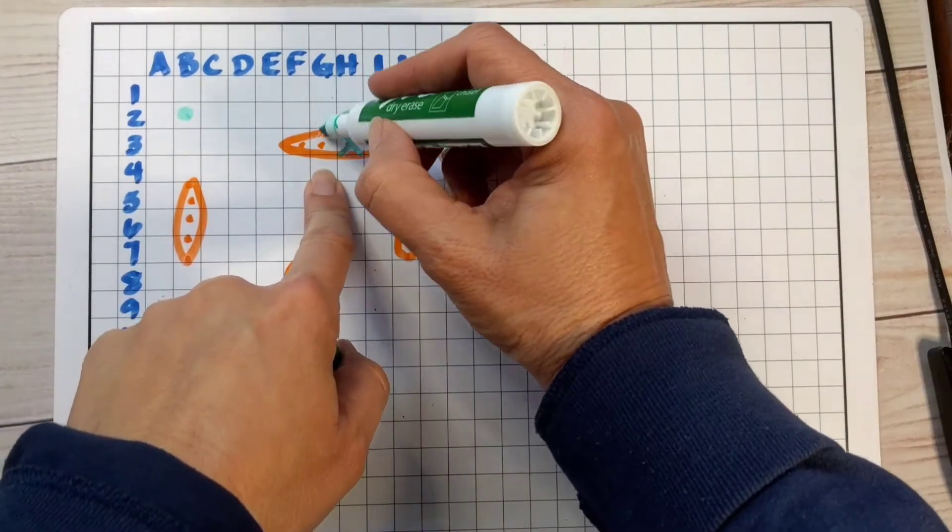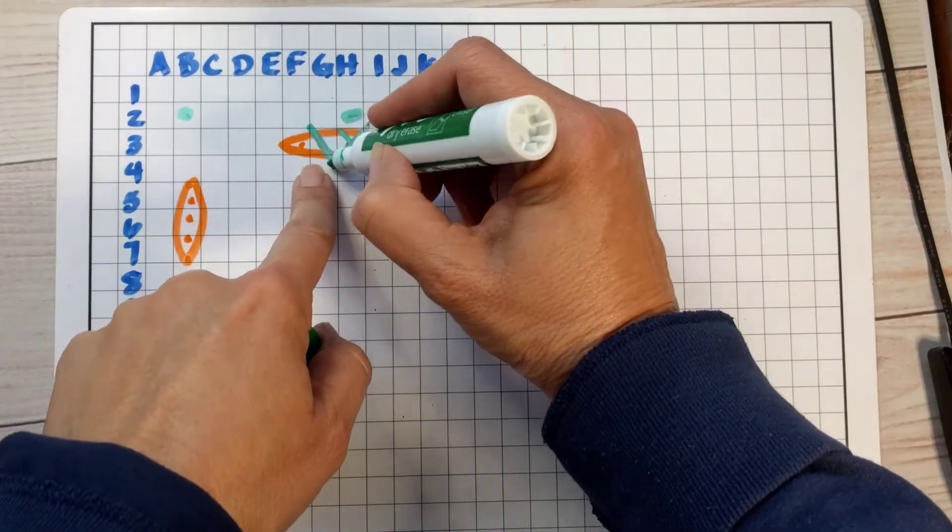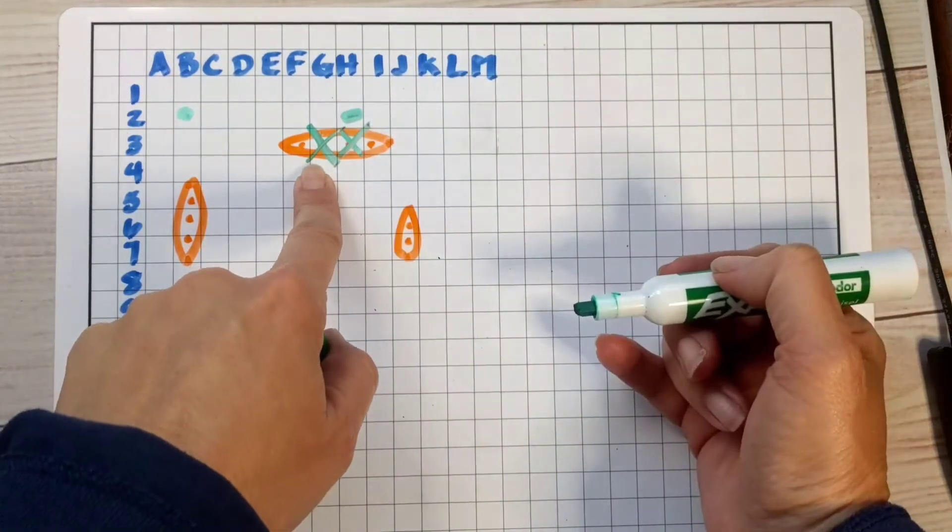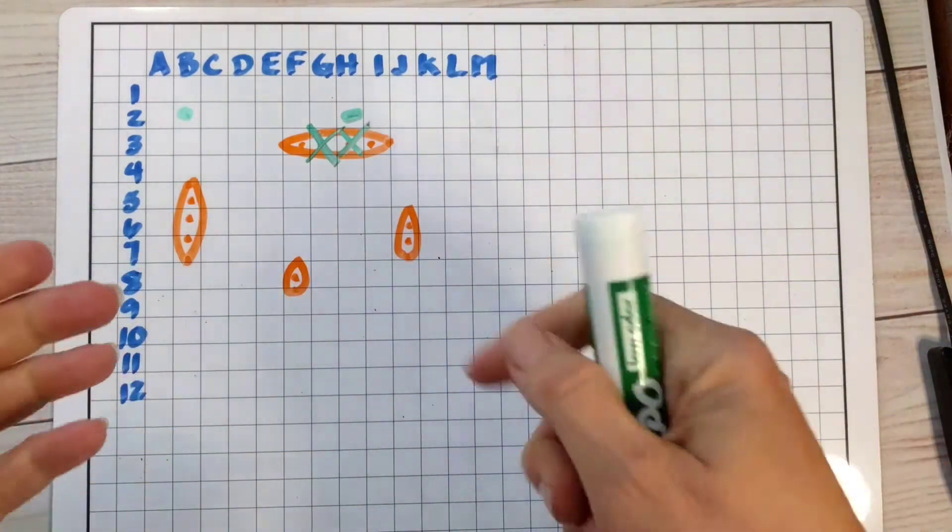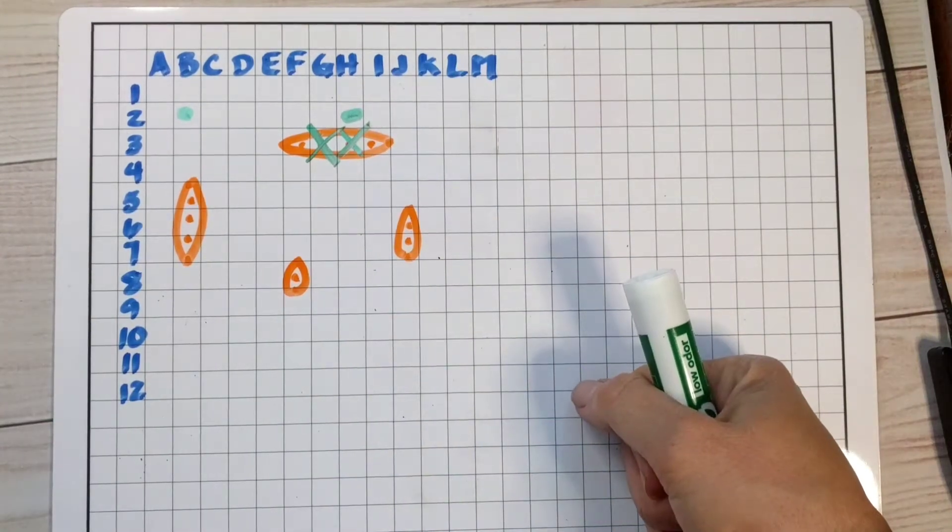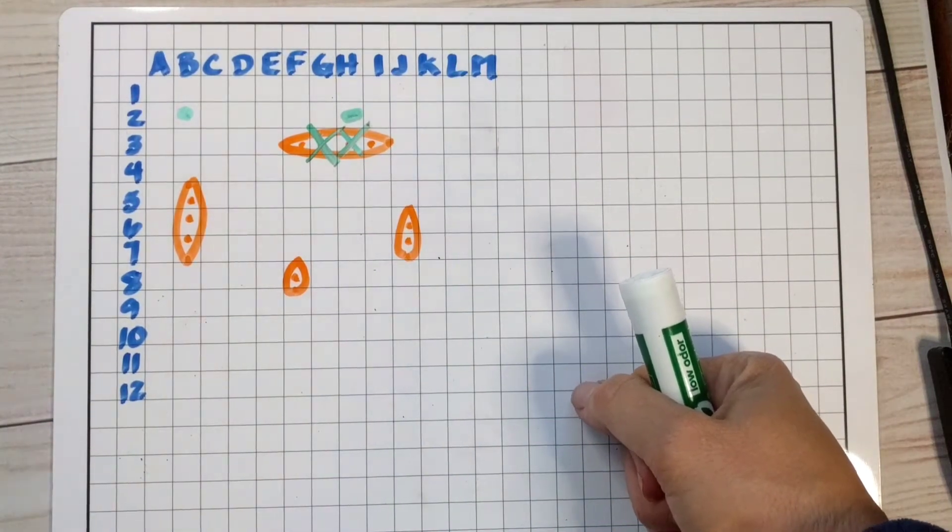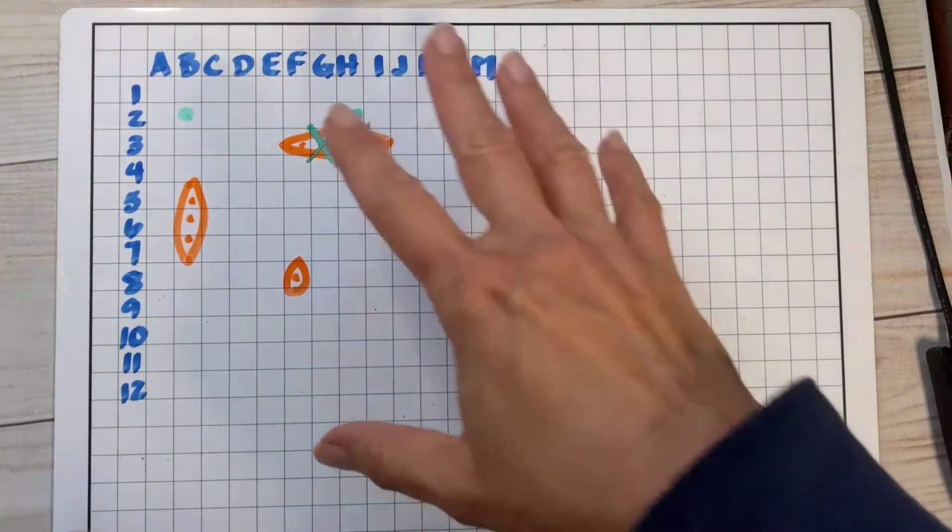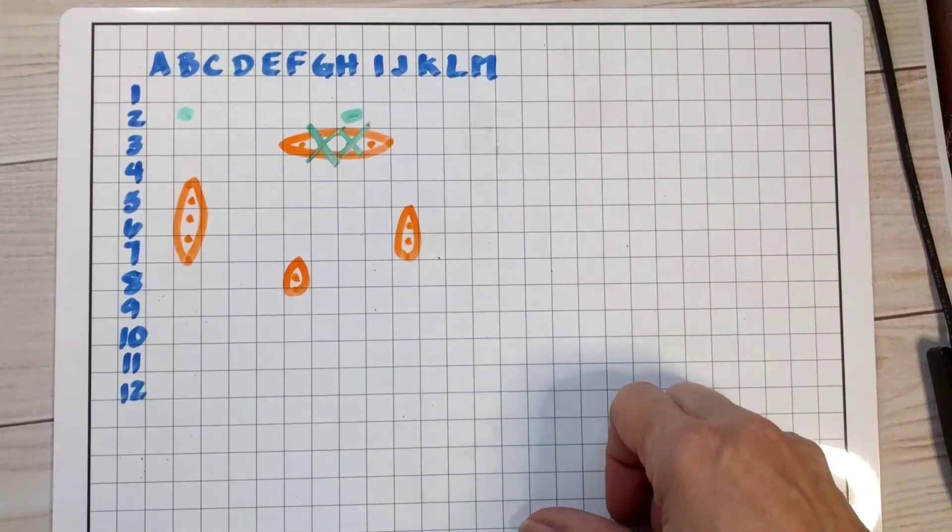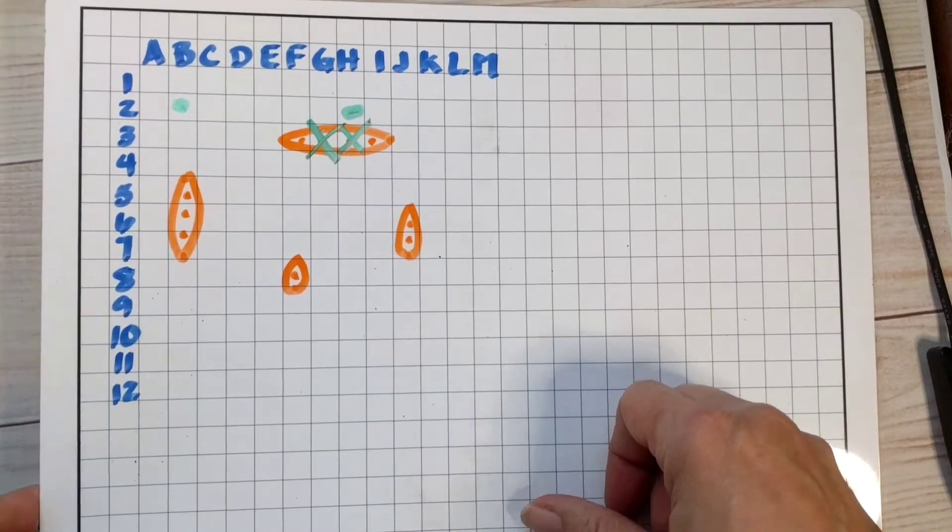On the next round, they can say G3, and you'll say hit, and so on. Okay, and then whoever sinks all the battleships first wins the game. Well, this lesson isn't a whole lot different than the battleship game. It's all you're doing is finding coordinates on a grid like this game, and it's just a little bit different format.